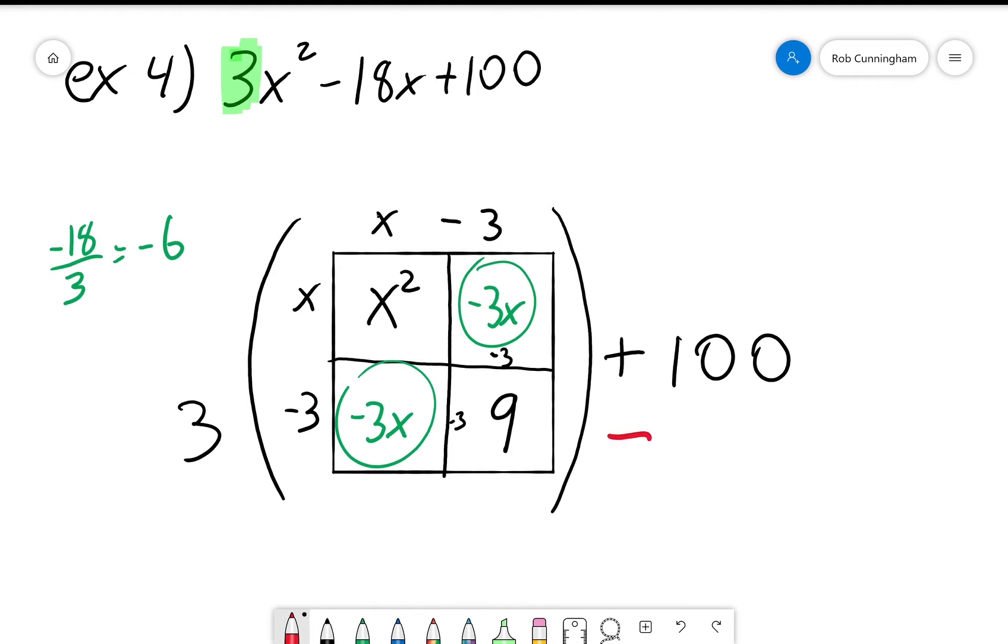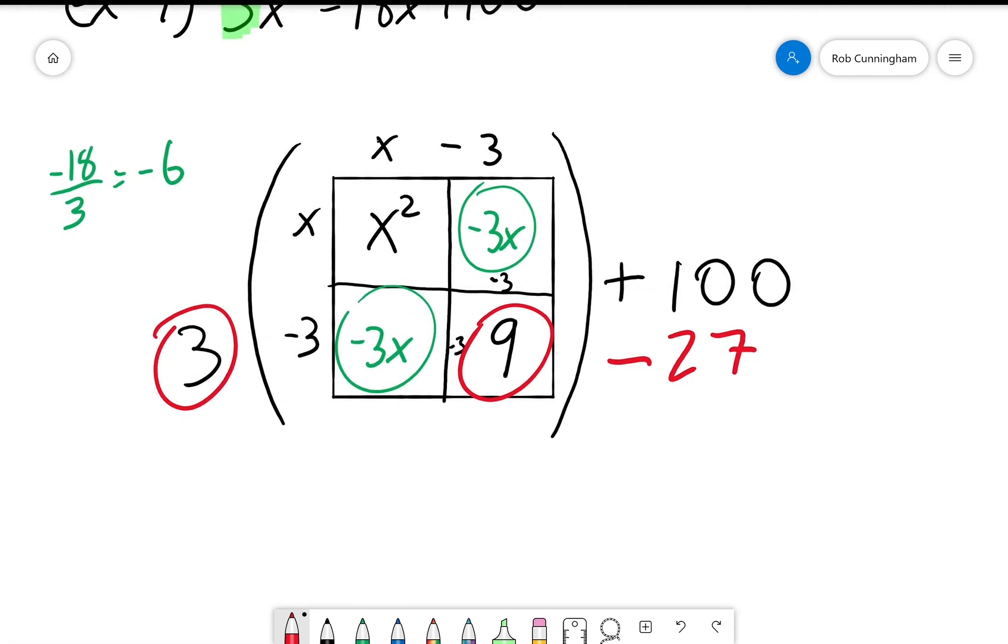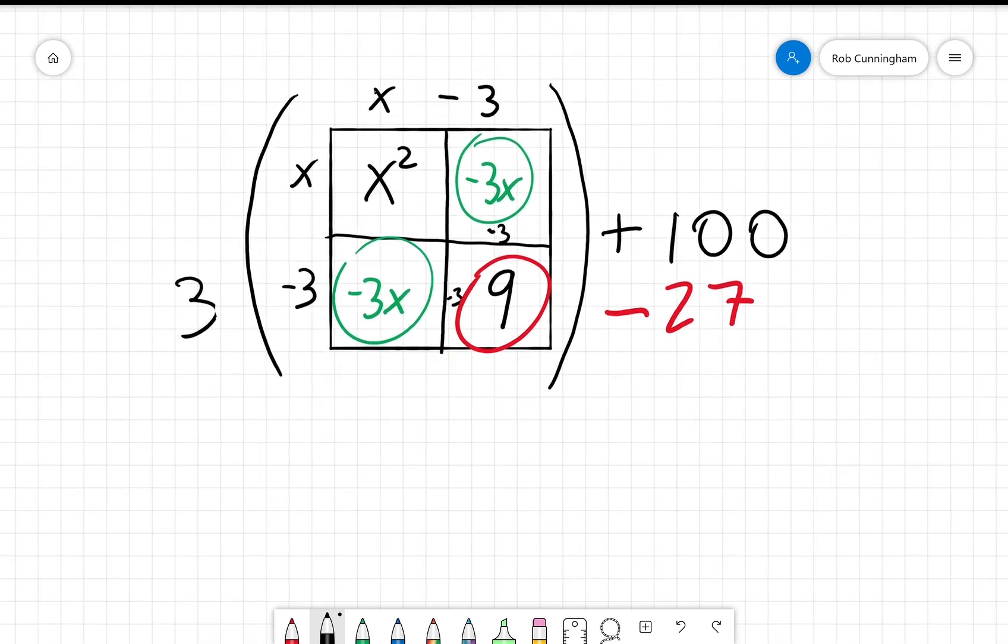And that means I have to add 9 because negative 3 times negative 3 is positive 9. It's not actually just positive 9 though, it's actually positive 9 times positive 3. So we're going to take that 27 back away. Remember that I can't just change things for the sake of changing them. I have to compensate somehow.